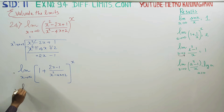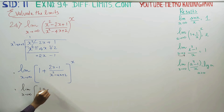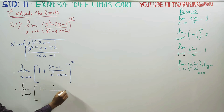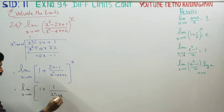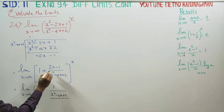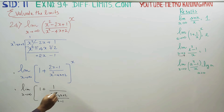So, limit x turns to infinity of 1 plus (2x - 1) / (x² - 4x + 2), divided. Then whole power x.